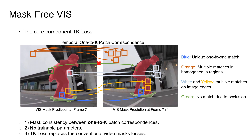Our TK loss covers three cases: (1) a unique one-to-one match exists (blue); (2) multiple matches are found due to ambiguities in homogeneous regions (orange) or long image edges (white and yellow); (3) no match is found due to occlusions (green). This allows us to robustly leverage mask consistency constraints in challenging videos.